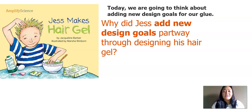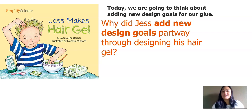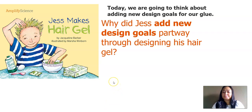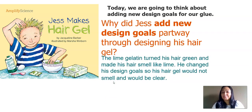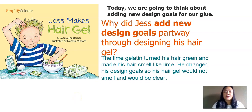Now we're going to think about adding a new design goal for our glue. I want us to think back to this book that we read — Jess Makes Hair Gel. Why did Jess add new design goals partway through designing his hair gel? The lime gelatin turned his hair green and made his hair smell like lime. He changed his design goal so his hair gel would not smell and it would be clear.